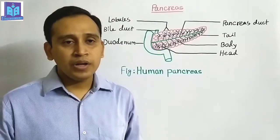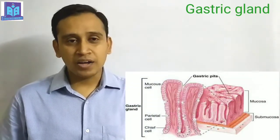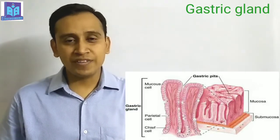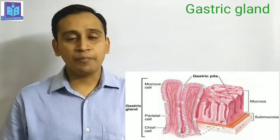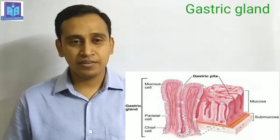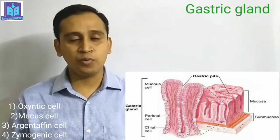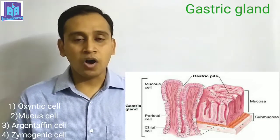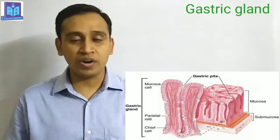I hope you got the point. Now, gastric gland. Gastric gland is located in the wall of the stomach. The wall of the stomach consists of five layers; among them, the mucosa contains the gastric glands. Gastric glands are unicellular glands. The secretion of gastric gland is called gastric juice. A healthy person can produce two liters of gastric juice in a day. There are four types of cells found in gastric gland: number one, oxyntic cell; number two, mucus cell; number three, argentaffin cell; and number four, zymogenic cells. The main component of gastric juice is water — 99.45% — and the rest are organic and inorganic components.